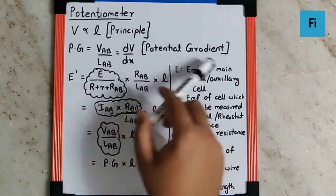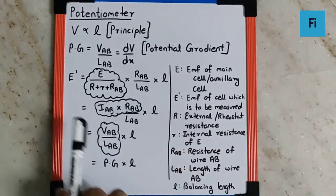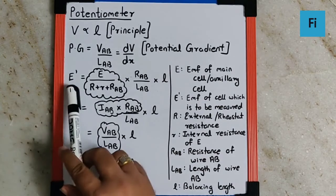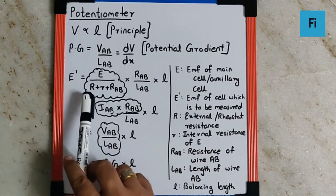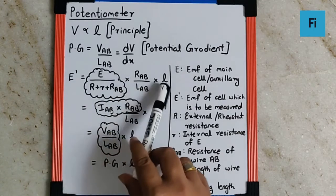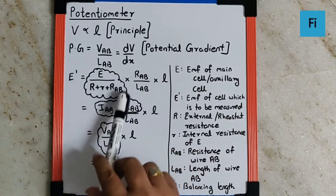Now the most important formula for potentiometer which we mainly use is E' equals E upon r plus small r plus RAB into RAB by LAB into L, where this part of the formula can be written as IAB.